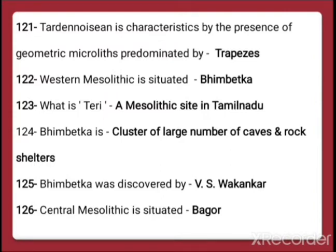Question 122: Western Mesolithic is situated in Bhimbetka. The Western Mesolithic culture was situated at Bhimbetka, which is a group of caves in Madhya Pradesh's Raisen district. It is a very important archaeological site, and evidences from the Stone Age, from Acheulian times onwards, have been found here.